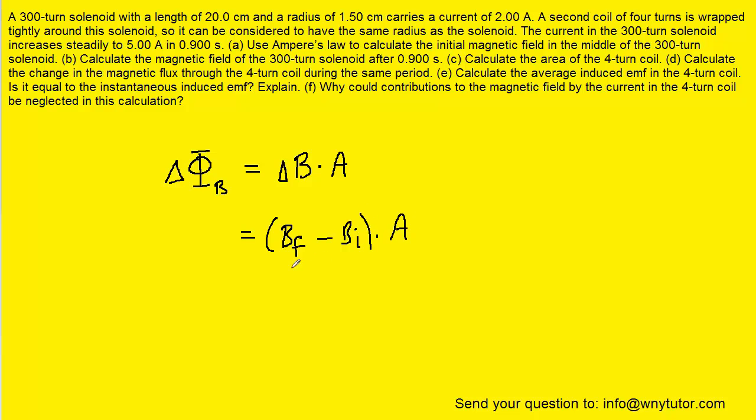Remember, in the previous parts of the question, we found the final magnetic field in part B of the question. The initial magnetic field was determined in part A, and then we just figured out the area in part C. So all of this kind of hangs together. We can go ahead and plug in all those known values.